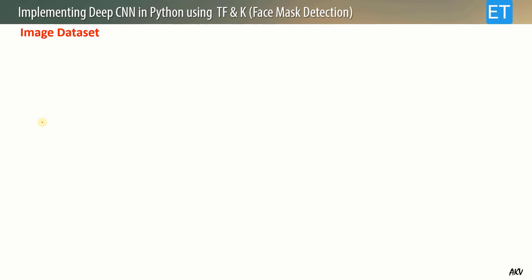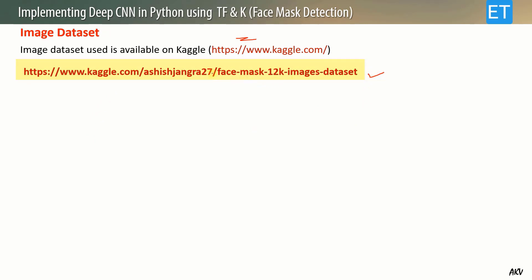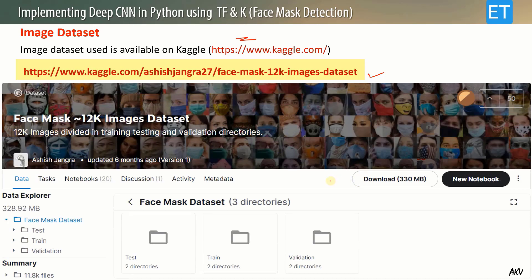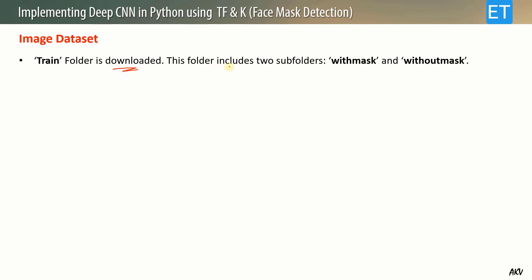Now let us go through the image dataset on which we will implement the deep CNN. This dataset is available on Kaggle — the link is given in the description. When you open the web page, locate the download button and click it to download the dataset, which has a size of 330 MB. It includes three folders, but for our problem we only need the 'train' folder, which has two subdirectories named 'with mask' and 'without mask'.